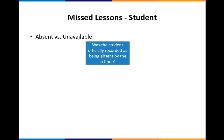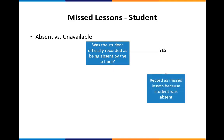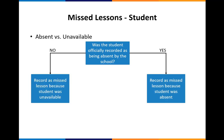If the school record says the child was officially absent that day, you will record this lesson as missed because the student was absent. If the student wasn't officially absent, record the lesson as missed because the student was unavailable.